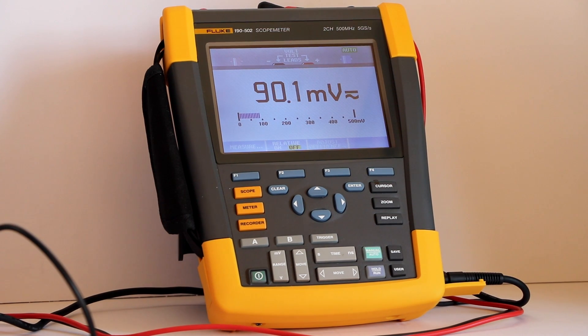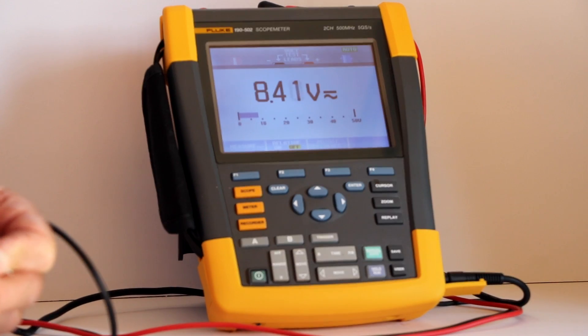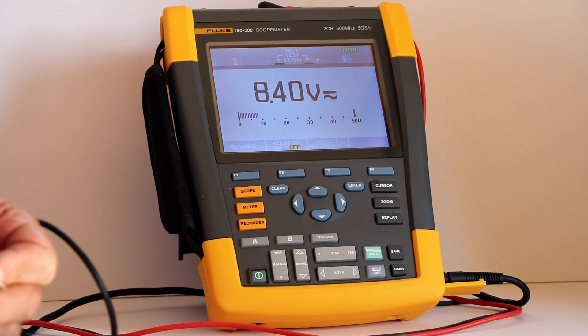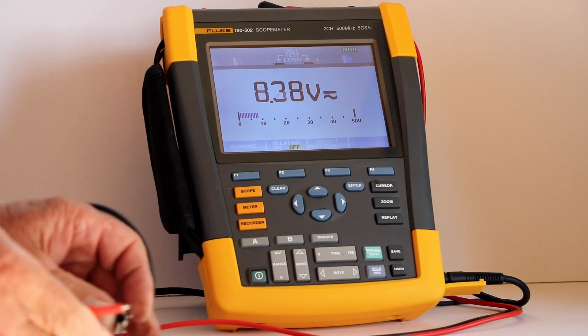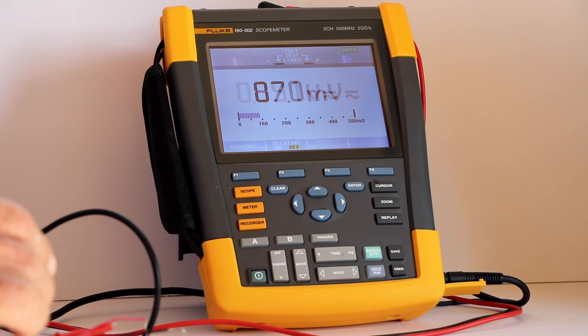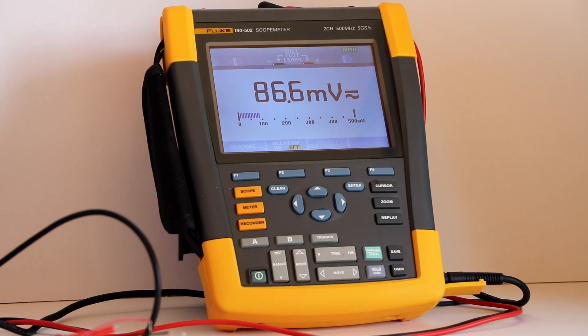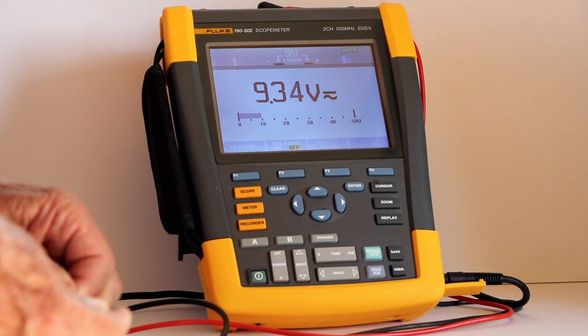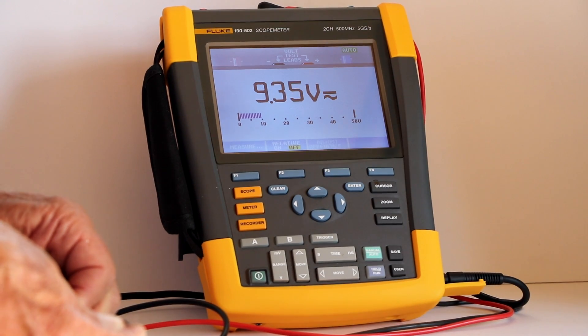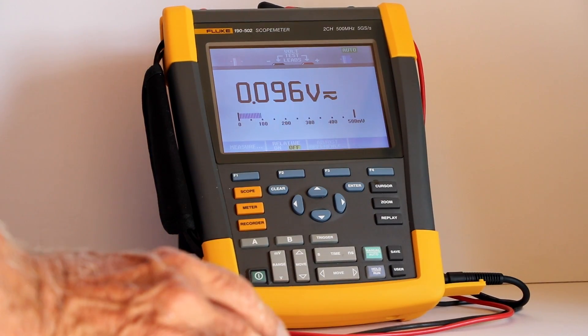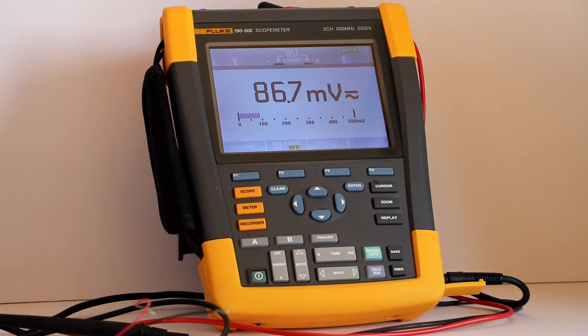First, a 9-volt battery. Notice that the voltage is 8.4 volts. This indicates only that the battery is low. We'll try another battery. Notice that the voltage is 9.35. That means it's a good battery, fairly new.